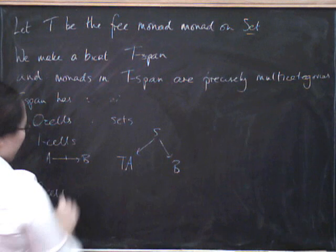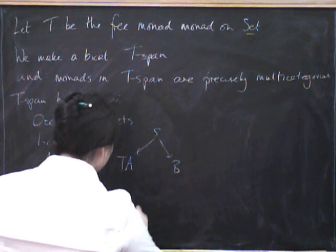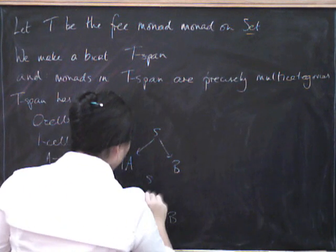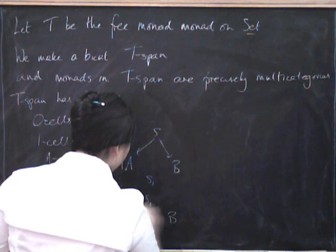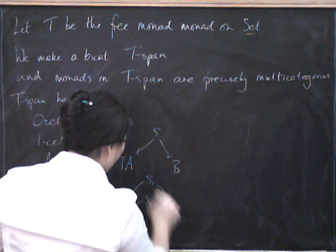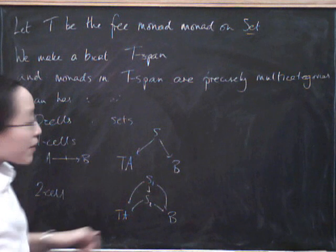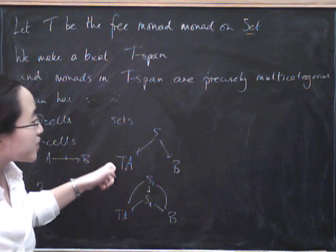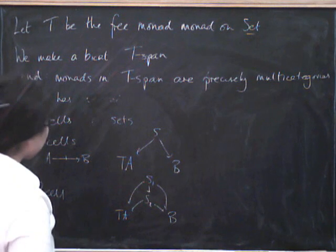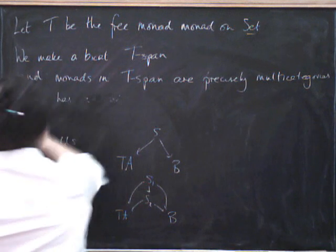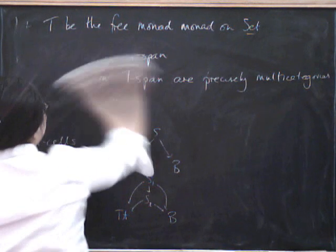Then a two cell is just going to be the same as before. We've got one span here and another span here. And a two cell is just going to be a morphism like that. So now we have to decide how we're going to compose these things. And this is slightly interesting. Let's just leave our picture of a T-span up there.